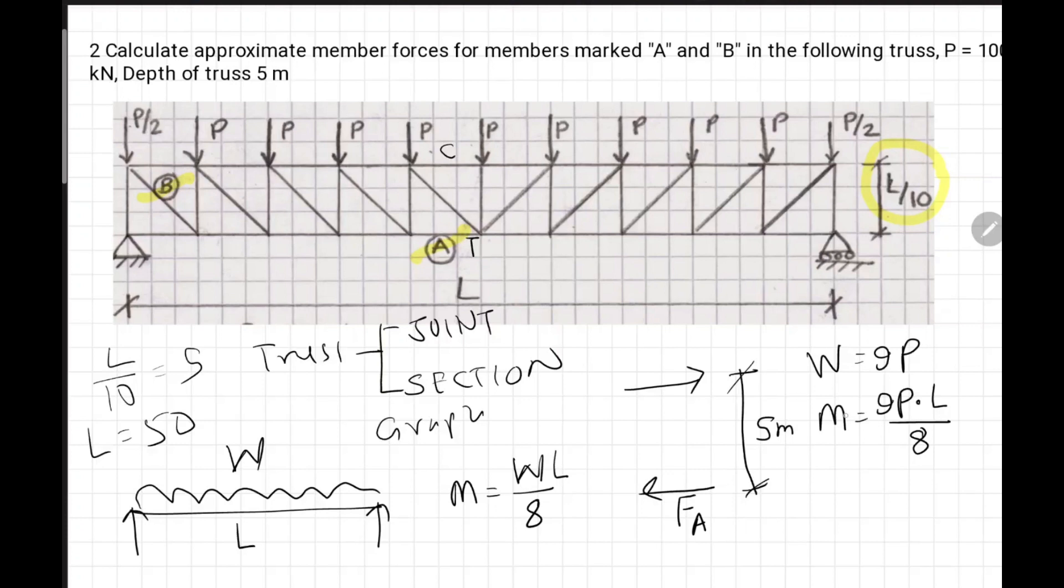Once we know the moment, we can calculate force F_A equals moment divided by the lever arm, which is 5 meters. And we can find force approximately in the top chord and bottom chord.